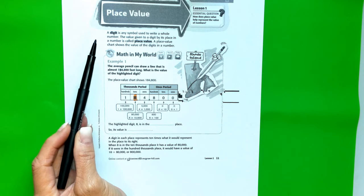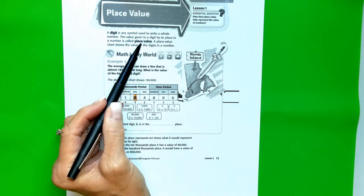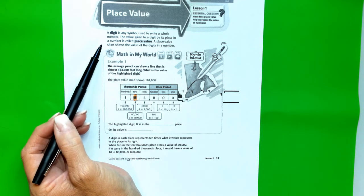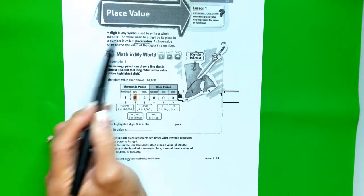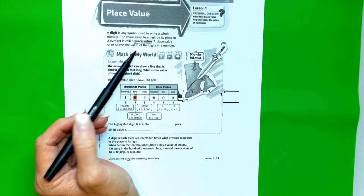So let's read. A digit is any symbol used to write a whole number. The value given to a digit by its place in a number is called place value. A place value chart shows the value of digits in a number.